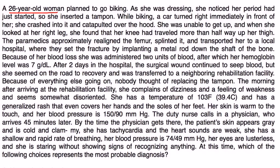A 26-year-old woman planned to go biking. As she was dressing, she noticed her period had just started, so she inserted a tampon. While biking, a car turned right immediately in front of her; she crashed into it and catapulted over the hood and was unable to get up. Her knee had traveled more than halfway up her thigh. Paramedics realigned the femur, splinted it, and transported her to a local hospital, where they set the fracture by implanting a metal rod down the shaft of the bone.